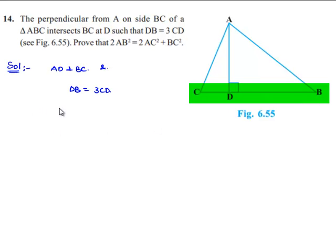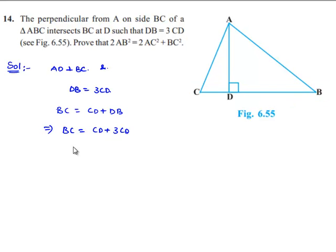We can say BC is equal to CD plus DB, which implies BC is equal to CD plus 3CD, which implies BC is equal to 4 times CD.